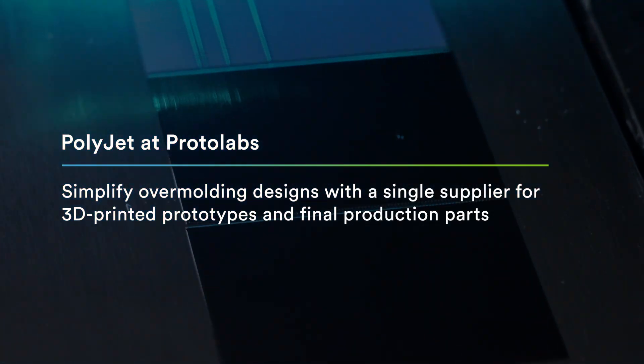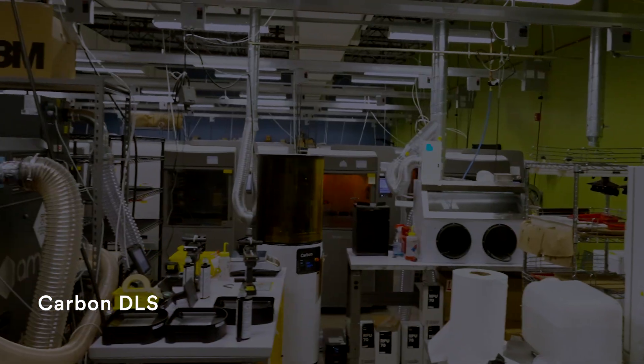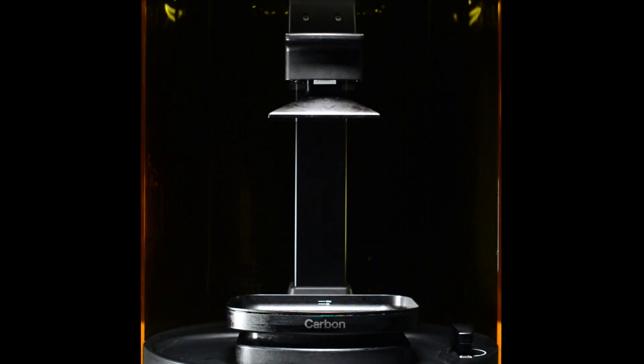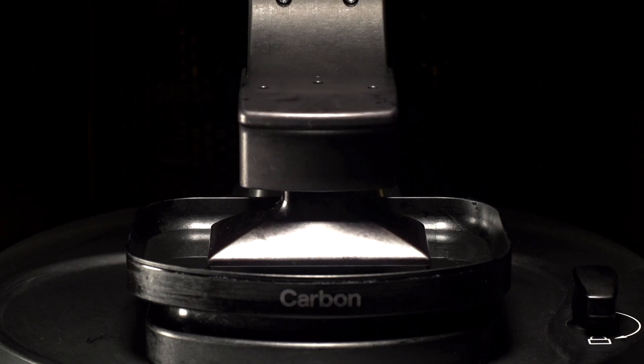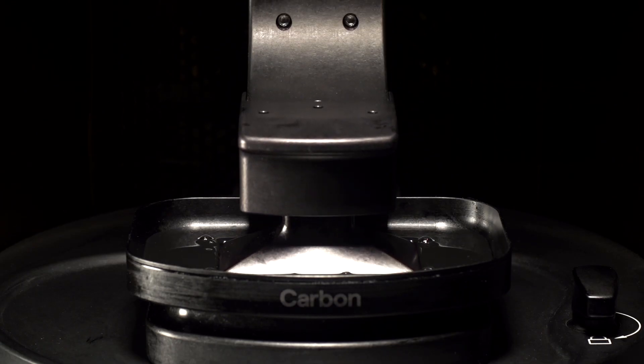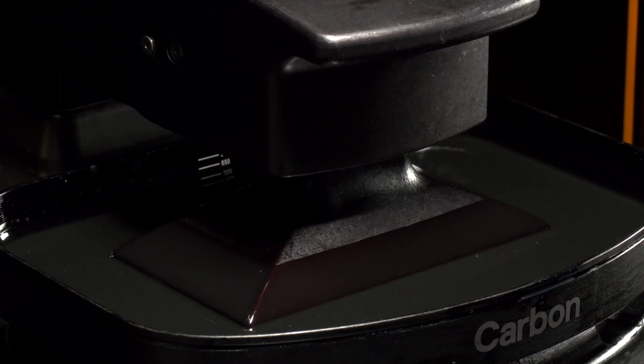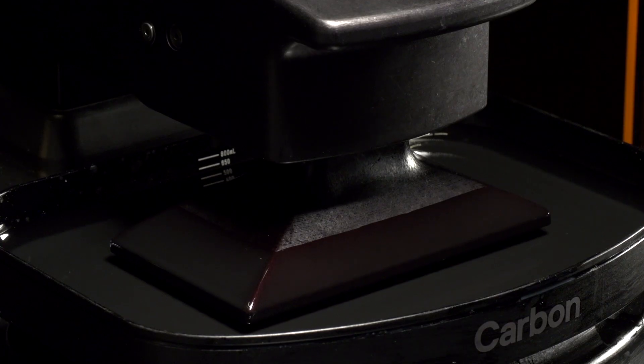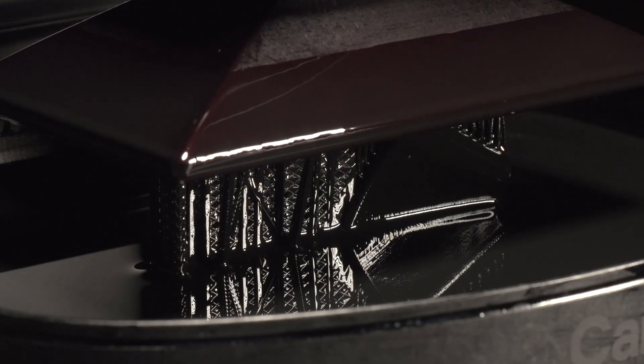Next to the PolyJet machines is the finishing station, where a water jet is used to remove support structure material. Digital Light Synthesis is the signature technology of digital manufacturing company Carbon. It allows for the rapid 3D printing of plastic parts in production-grade materials. DLS technology uses light to set the 3D shape of printed parts, then parts undergo a thermal curing process that brings them to their final material properties.